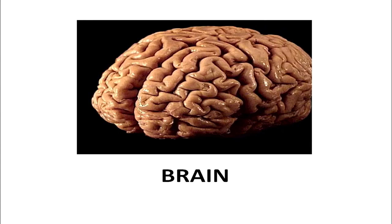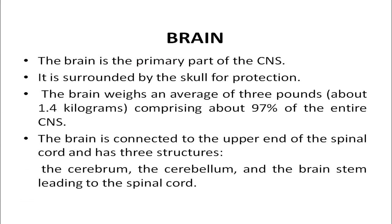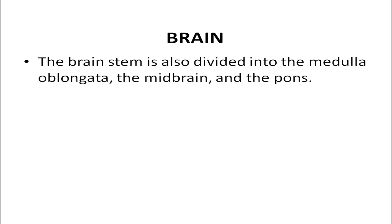The brain is the primary part of the central nervous system, surrounded by the skull for protection. It weighs on average 3 pounds, about 1.4 kilograms, comprising about 97 percent of the entire central nervous system. The brain is connected to the upper end of the spinal cord and has three structures: the cerebrum, the cerebellum, and the brain stem. The brain stem is divided into the medulla oblongata, the midbrain, and the pons.